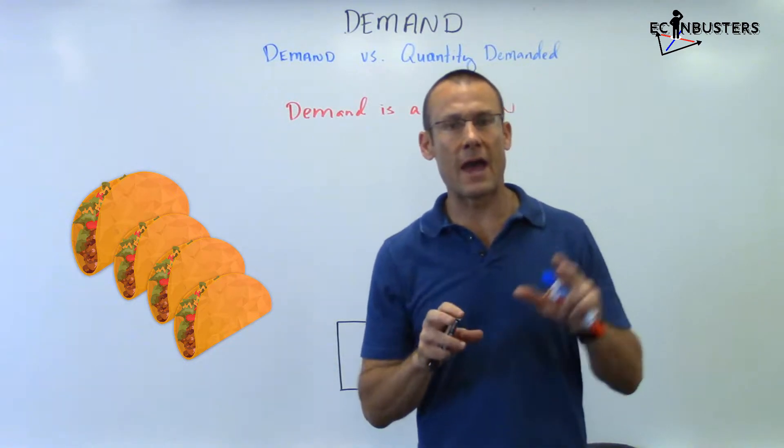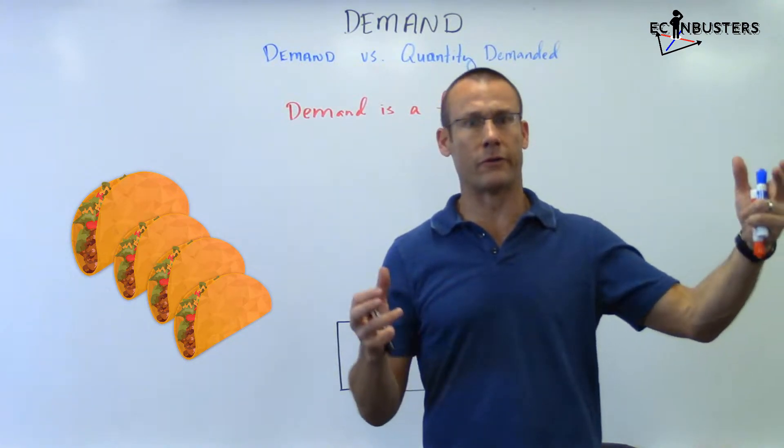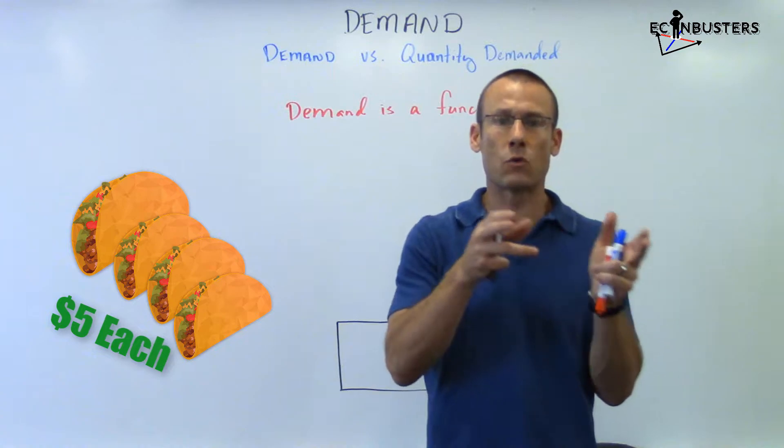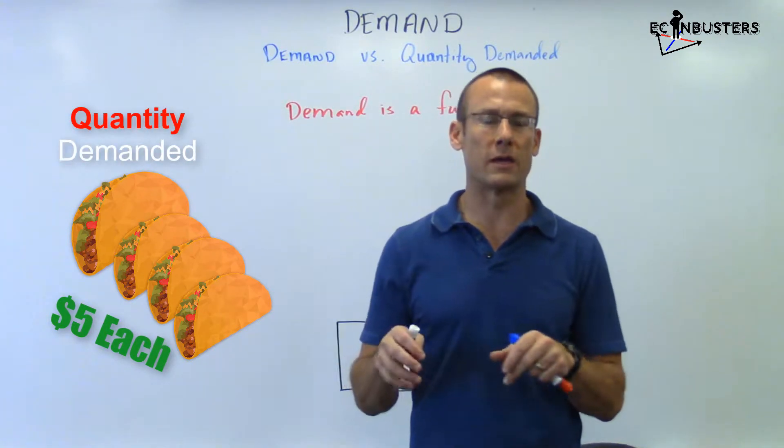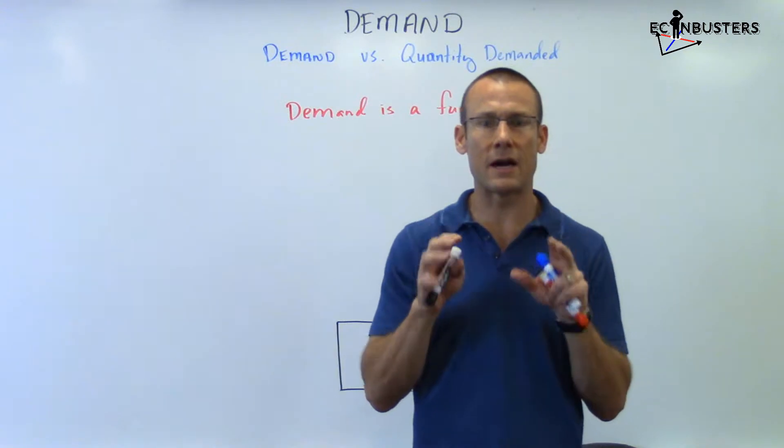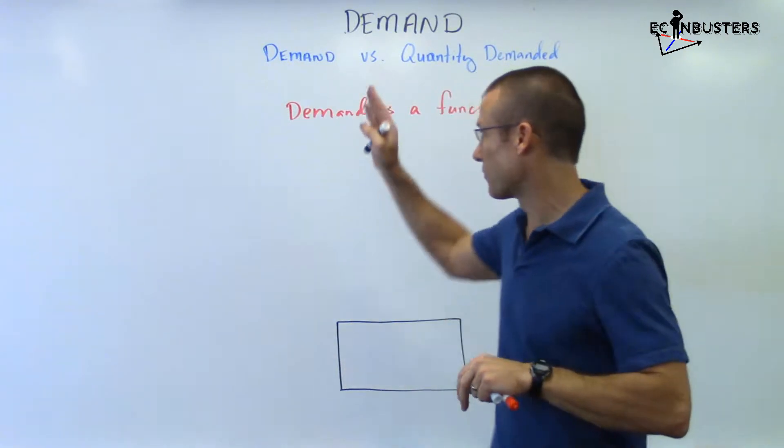I'm just going to tell you that what that person should actually say if they were an economist or what an economist would say is they would say at that particular price point, I don't know, $5 a taco, my quantity demanded for tacos is four. So there's a lot of precision that economists want when they use these different terms.